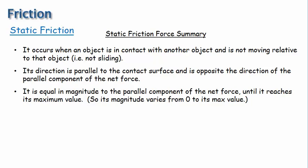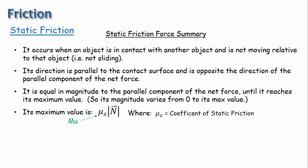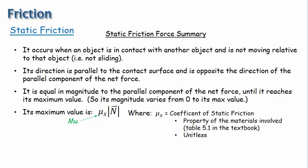You might wonder how we can determine what that max value is. It can be calculated with this equation, where this symbol is the Greek letter mu with an s subscript, because it's associated with static friction. Mu sub s is called the coefficient of static friction, which is a property of the two materials involved. It basically represents the fact that some materials slide more easily than others — a larger coefficient means more friction. So if the refrigerator is on concrete, it would have a relatively large coefficient, but if it is on ice, it would have a relatively small coefficient. A list of these coefficients can be found in table 5.1 in the textbook.